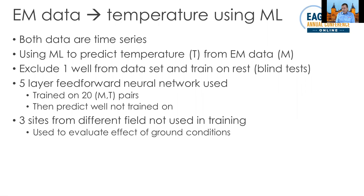We also included three sites from a different location that were not used in training to make a prediction there. What information is in the radar data? It's determined by the geology, the materials, and the temperature. If we could keep the materials constant and vary the temperature, we have a chance. If both are varying, not so much. The 21 wells in the oil field had fairly homogeneous geology, but the three other sites were different. So we can expect that not to work if the machine learning algorithm really separates out the constant geology from the data — and that turns out to be the case.